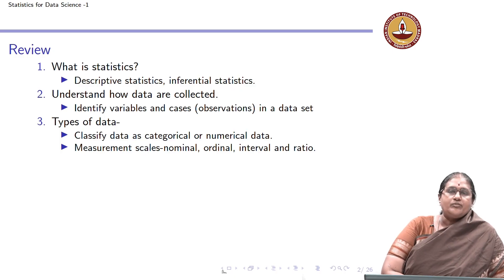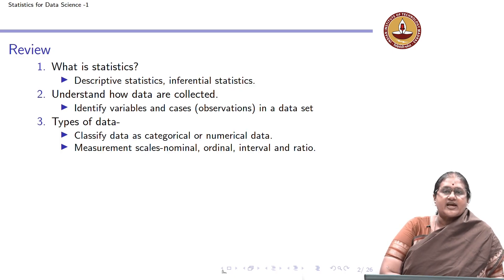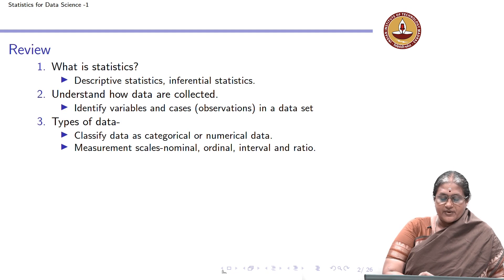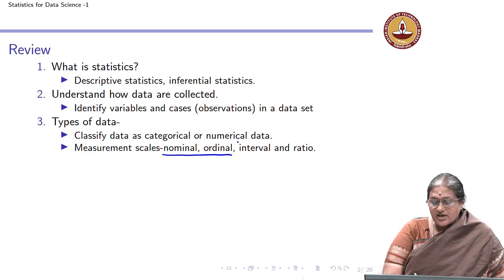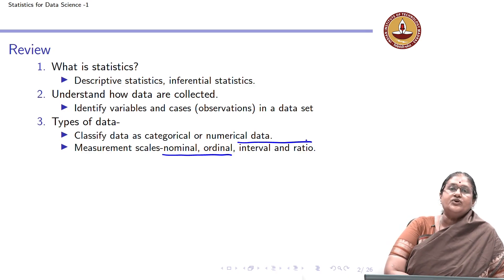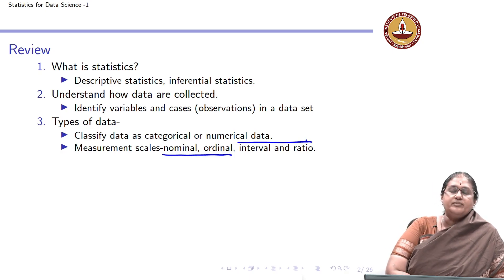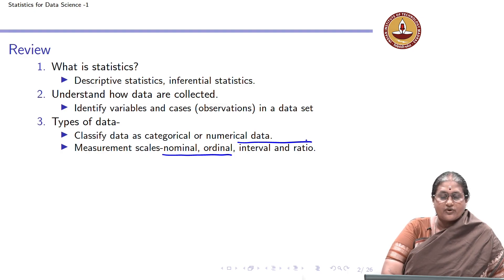Then we spent some time to understand the scales of measurement of variables. We introduced four prominent scales: namely the nominal, ordinal, interval, and ratio scales. The nominal and ordinal scales are used for categorical data, whereas the interval and ratio scales are used for numerical data. We also discussed what arithmetic operations are possible for each scale of measurement.